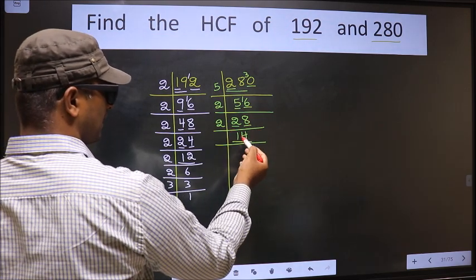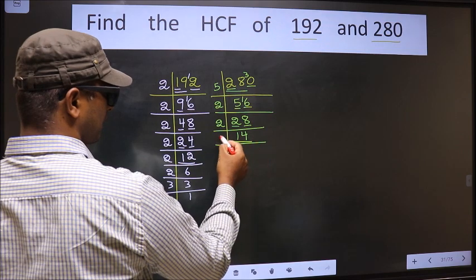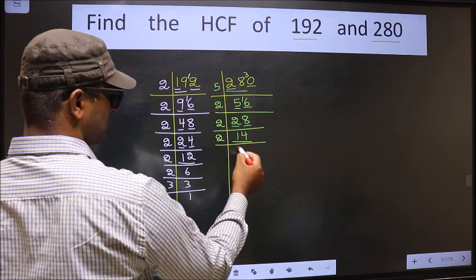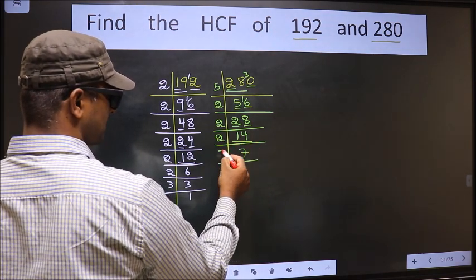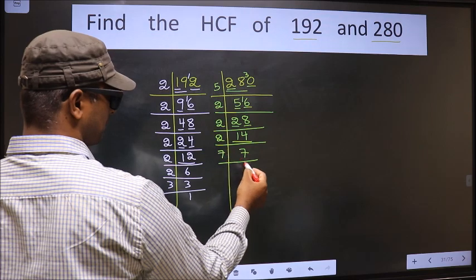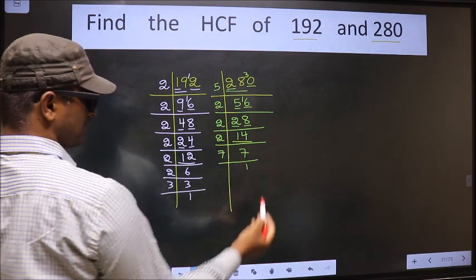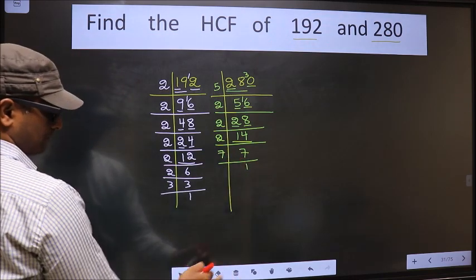Here we have 14. 14 is 2 times 7, which is 14. Now we have 7; 7 is a prime number, so 7 times 1 is 7.